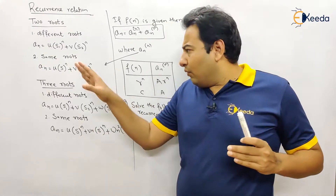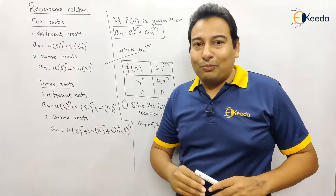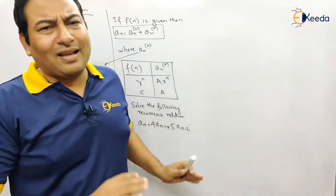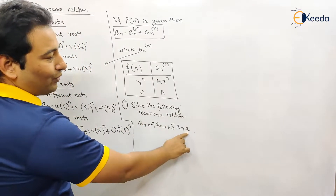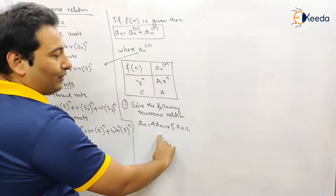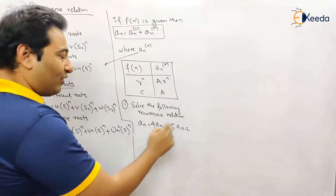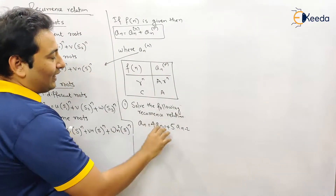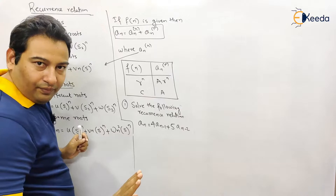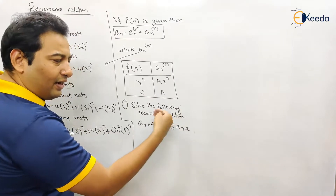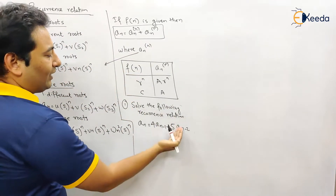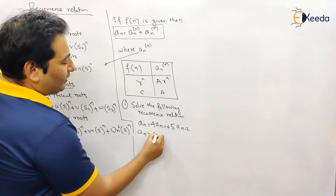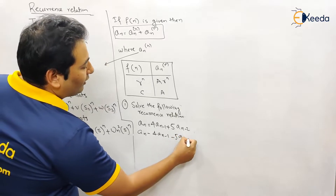We just discussed the theory — don't worry if it wasn't fully clear, it will become clear with the example. Our problem is to solve the given recurrence relation. As discussed, a_n is represented using the same function a_n with previous values n-1 and n-2, hence it is called a recursive function. There is no f(n) in this problem — only a_n terms are present. We take all terms to one side: a_n - 4·a_(n-1) - 5·a_(n-2) = 0.